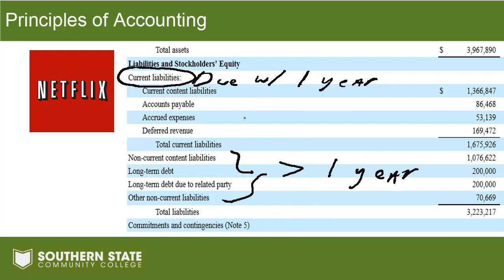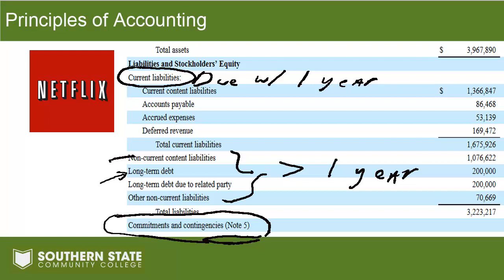Non-current liabilities include non-current content liabilities — payments due to movie and TV studios that are due more than one year out from the balance sheet date — and the long-term portion of debt, payments they're going to have to make more than one year out. Finally, at the bottom we have commitments and contingencies, which doesn't have a specific number but is included in the liability section. This could be disclosing lease payment obligations as a note to the financial statements, or disclosing amounts Netflix can't put a precise number to or can't say with certainty they'll be liable for — those are contingent liabilities, which we'll cover in another video.